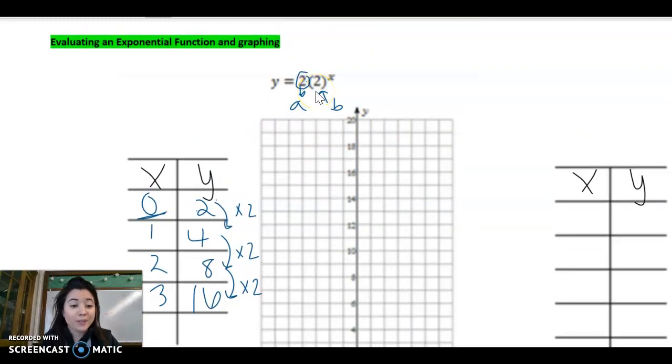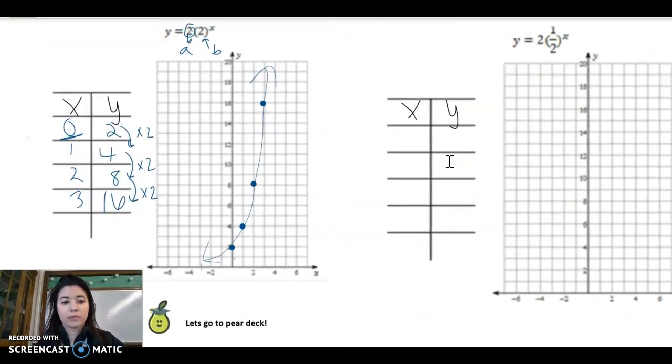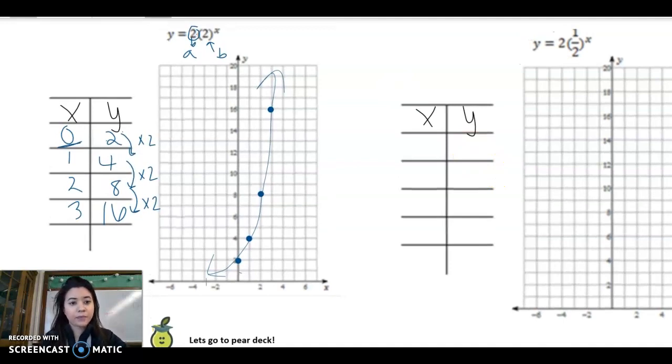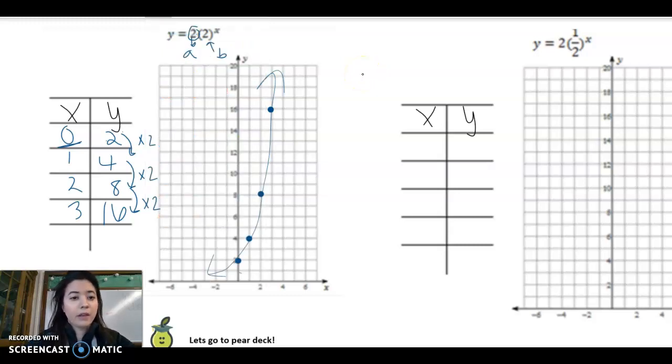And now we can go ahead and graph. One thing I notice is that my multiplier is bigger than 1, so this should be a growth. So we should see that nice J shape where it rockets up towards the sky. Let's just see if we get that. So 0, 2; 1, 4; 2, 8; 3, 16. And indeed, that's exactly what we're doing. It's rocketing up towards the sky. Pause me if you need to get that down. And I'm going to keep going.